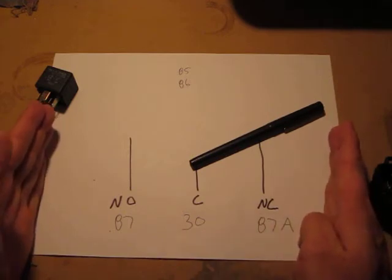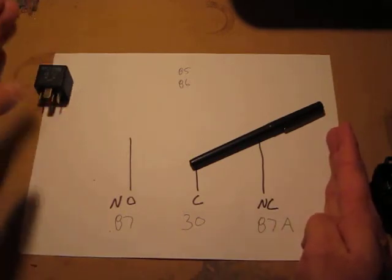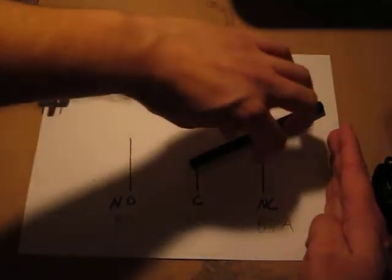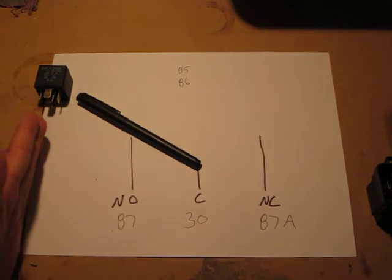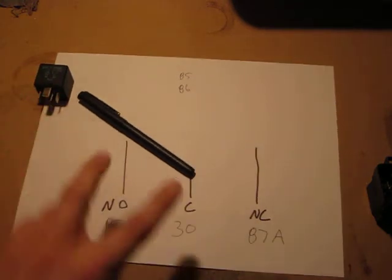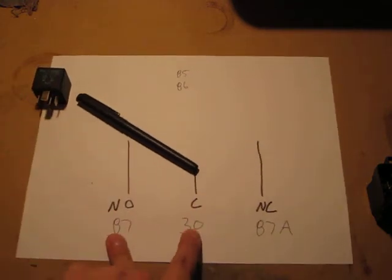When you energize the relay, or put the power to it to turn the switch, you are going to disconnect the green light bulb, and you're going to turn on the red light bulb, because now we've turned the switch to this way. We've made these two contacts.